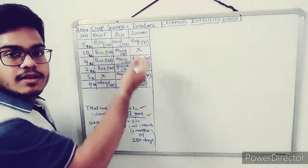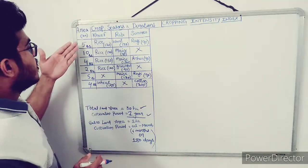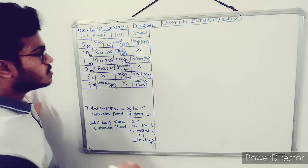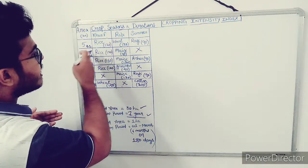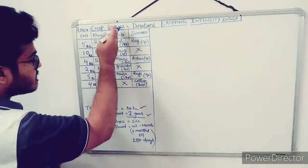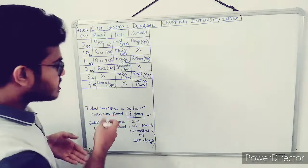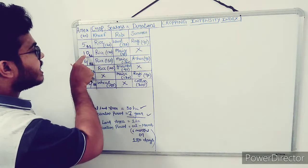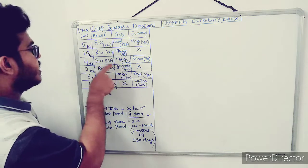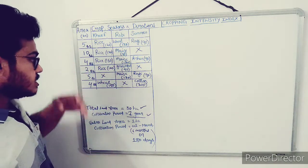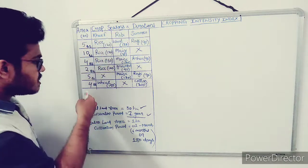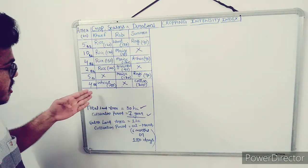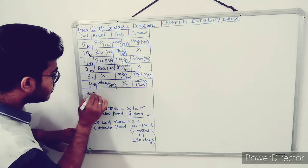For example, in the kharif season the farmer cultivated rice across multiple blocks, and in the rabi season he used Block 1 (5 hectares) for wheat, 10 hectares for maize, 4 hectares for maize again, and 2 hectares for groundnut. For each of the six blocks across different seasons, he cultivated five crops, and similarly for summer season as well. When you sum all these up, the total comes to 30 hectares.